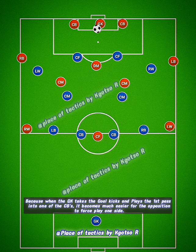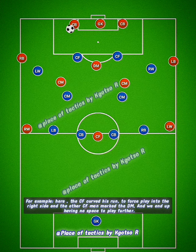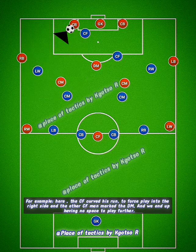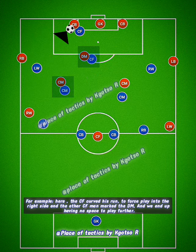If the goalkeeper takes the goal kick and plays the first pass into one of the center backs, it becomes much easier for the opposition to force play one side. As we can see here, the forward will curve his run, force the center back one side, and the opposite forward will look to latch onto the pivot player, and we end up with a build-up scenario